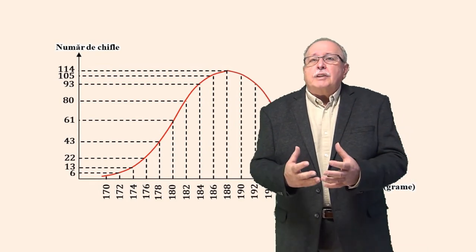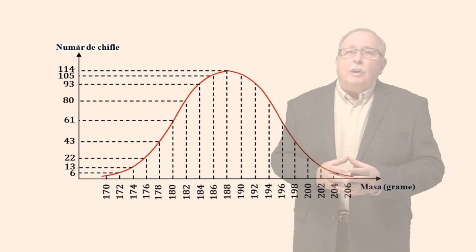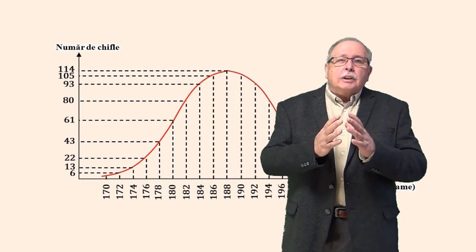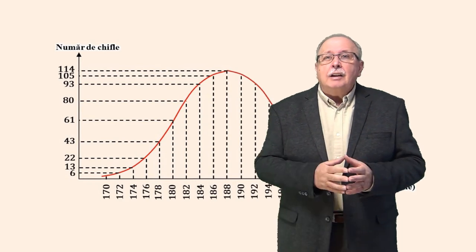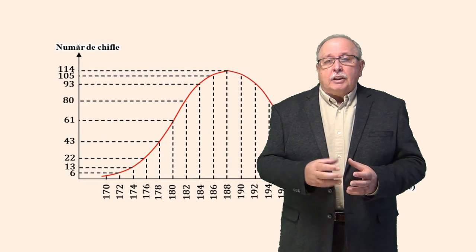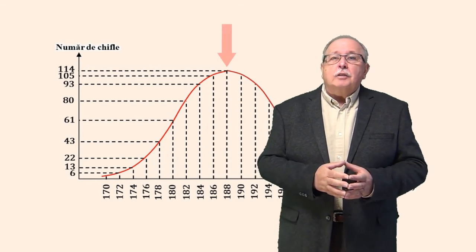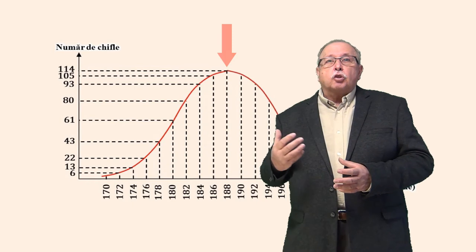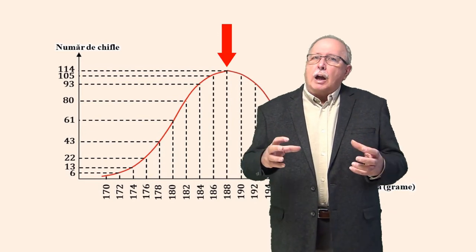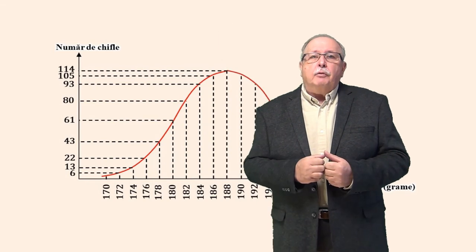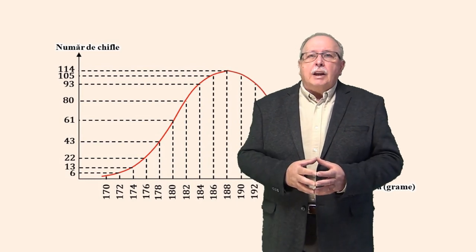Forma graficului era cea corectă, cea la care se aștepta profesorul, și anume o așa-numită distribuție Gauss. Aceasta se numește o distribuție normală. Forma de clopot a graficului arată că datele n-au fost manipulate. Numai că datele sunt întotdeauna distribuite în jurul unei anumite valori. Iar de data asta, valoarea respectivă nu era corectă. Pentru că, deși graficul arăta o distribuție normală, distribuția era în jurul valorii, după cum vedeți, de 188 de grame, și nu în jurul valorii de 200 de grame, cum ar fi trebuit. Asta însemna că brutarul avea formele în care turna aluatul mai mici decât ar fi trebuit. În loc să aibă forme pentru 200 de grame, formele lui erau cam pentru 188 de grame.